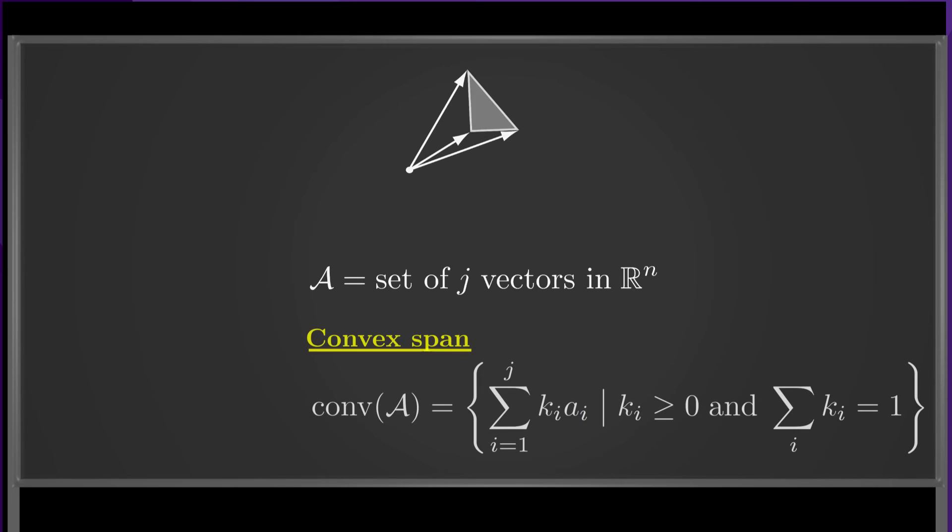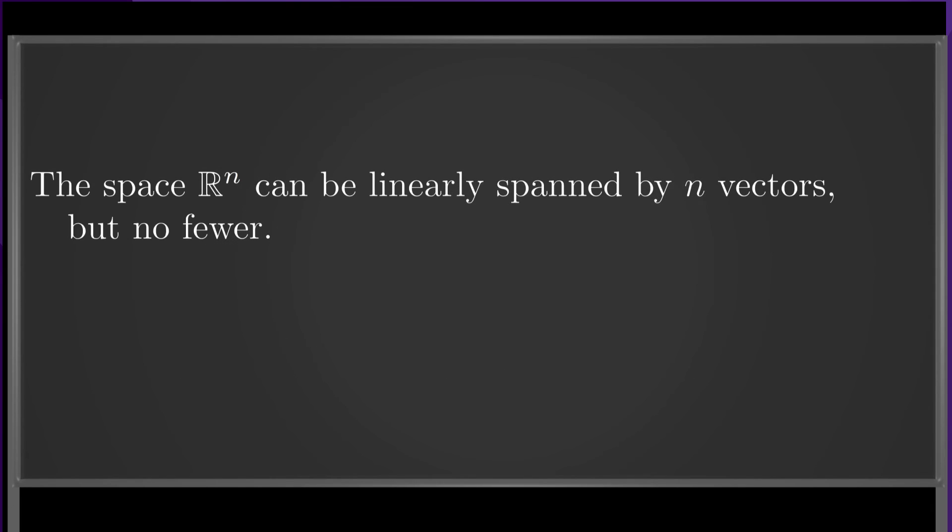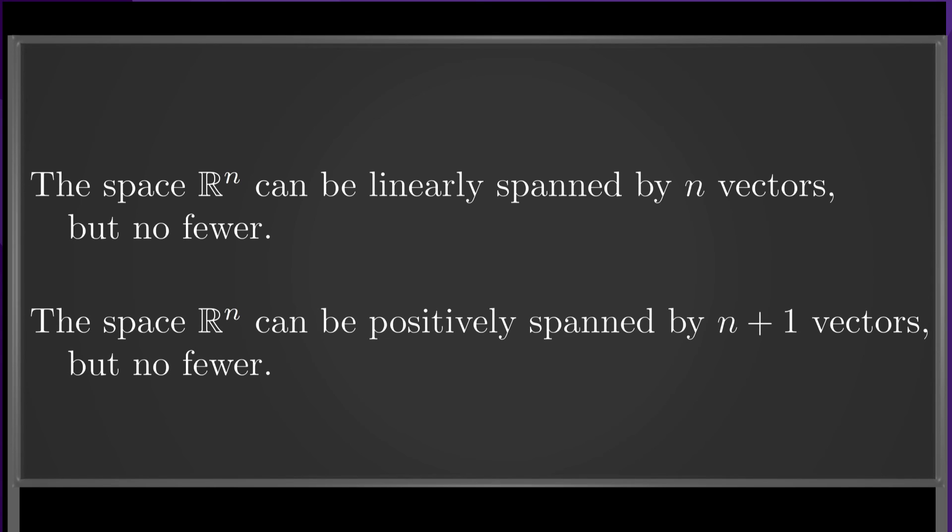Finally, we define the convex span, where the coefficients are all non-negative and sum to one. The convex span is indicated by the triangle and its interior. Clearly, the convex span is a subset of the positive span, which is a subset of the linear span. The following facts will also be useful. The space R^n can be linearly spanned by n vectors, but no fewer, and the space R^n can be positively spanned by n+1 vectors, but no fewer.